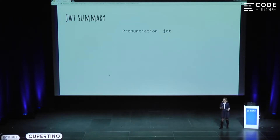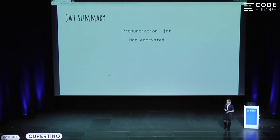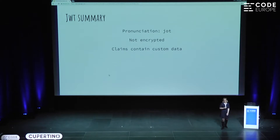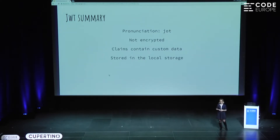Let's do a quick summary of what we've learned about JSON Web Tokens. The pronunciation — it's very common to call them 'jots.' JSON Web Tokens are not encrypted, so please keep in mind it's very important not to store sensitive data in your claims. Claims contain custom data, so feel free to store user data in your claims — that's useful because your server won't need to spend time retrieving user data. JSON Web Tokens are normally stored in local storage; they can also be stored in cookies, but local storage has some nice benefits.